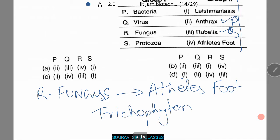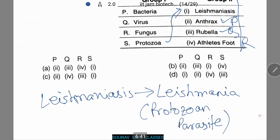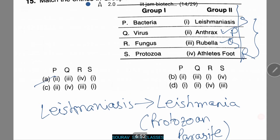So R is the answer for number 4. Lastly, leishmaniasis is caused by a protozoan parasite, and A is the answer. That matches all our answers.